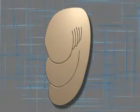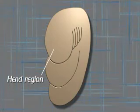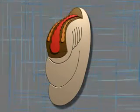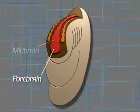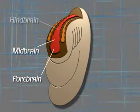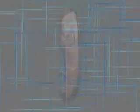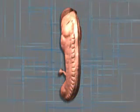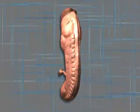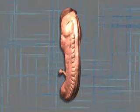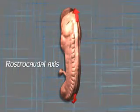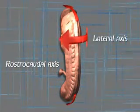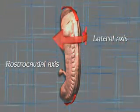A different series of events takes place in the head region. First, the neural tube undergoes massive expansion to form the forebrain, the midbrain, and the hindbrain. At this point, a crucial developmental event takes place. The embryo folds in two planes — that is, along the rostral-caudal axis and along the lateral axis.